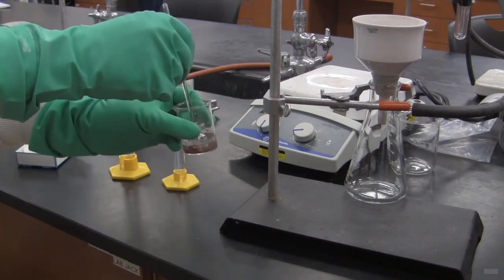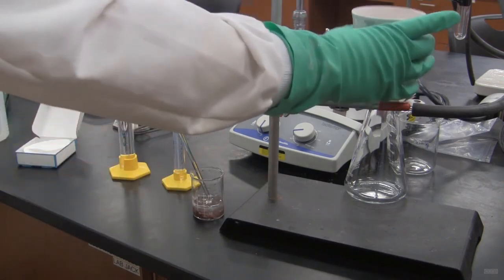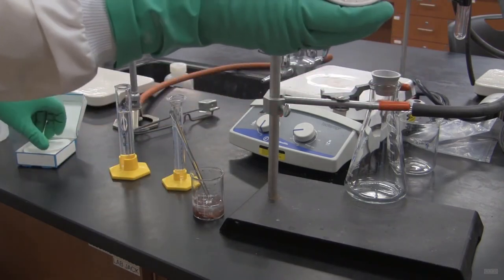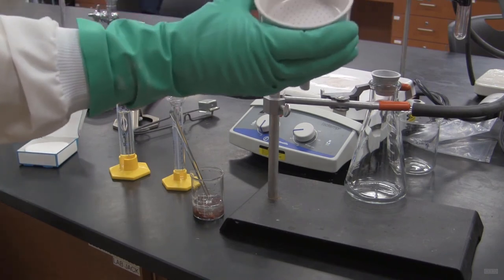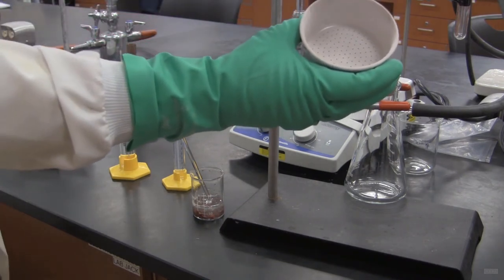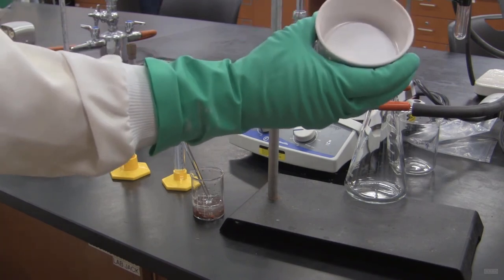So here we've got our copper, which we want to filter. And to do that, we're going to use the Buchner funnel setup. The Buchner funnel has a funnel on top and in this funnel I'm going to place a piece of filter paper. And the piece of filter paper has to fit exactly in the funnel. It goes in there like that.